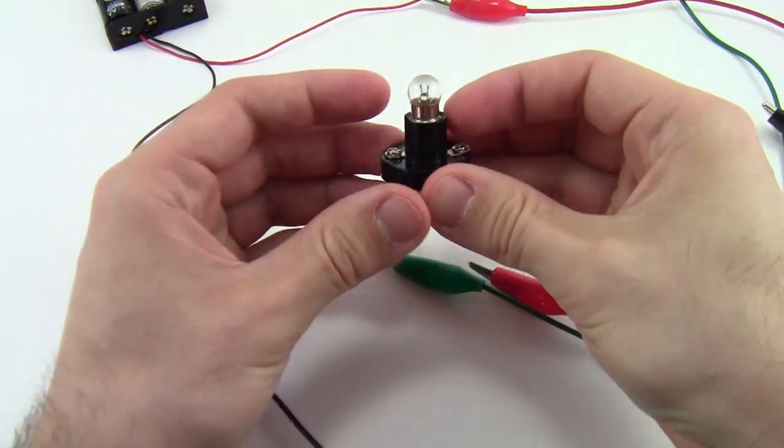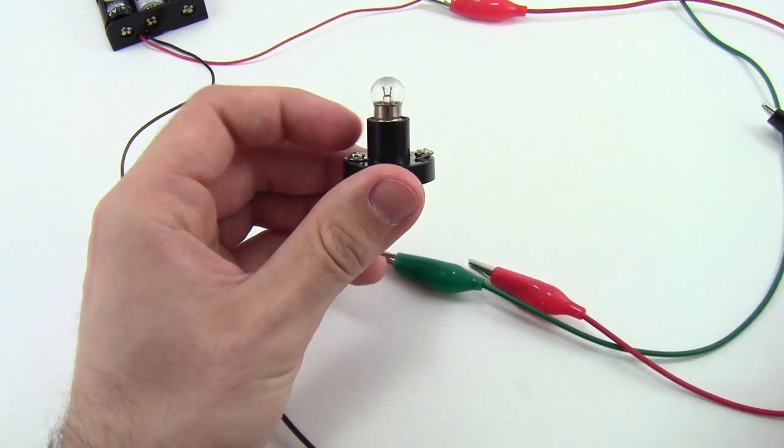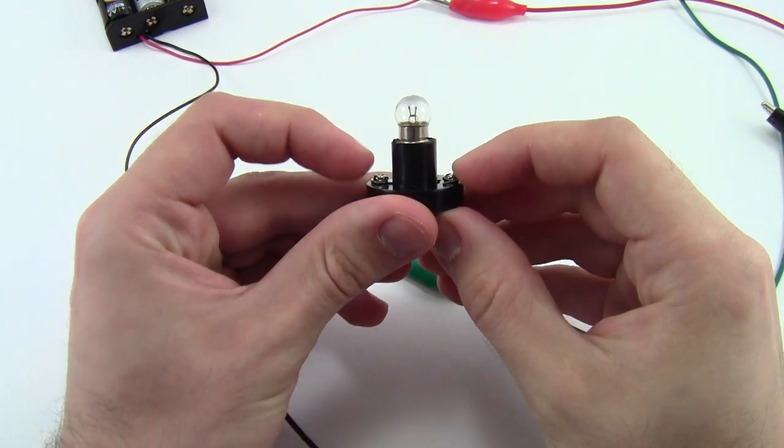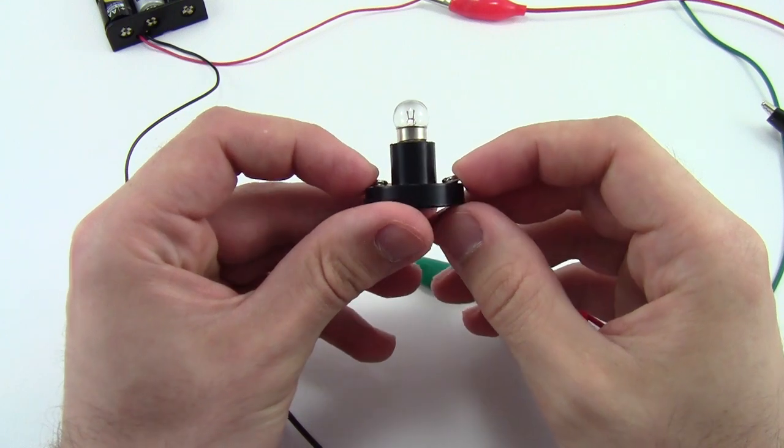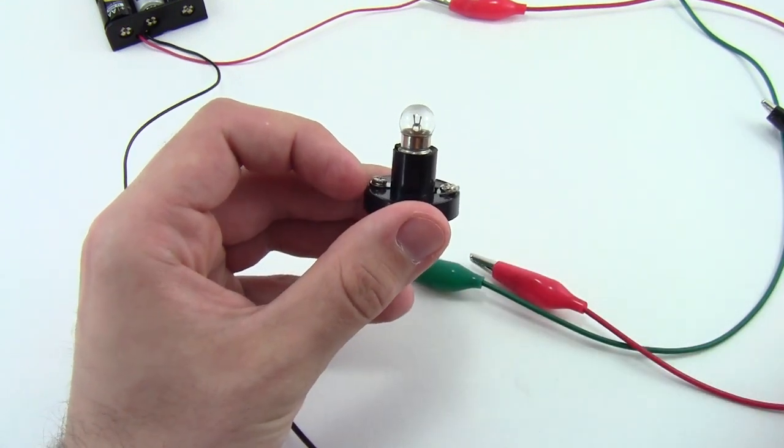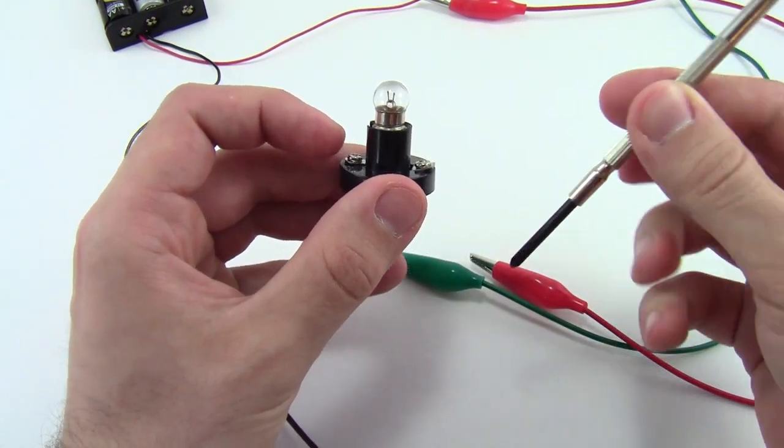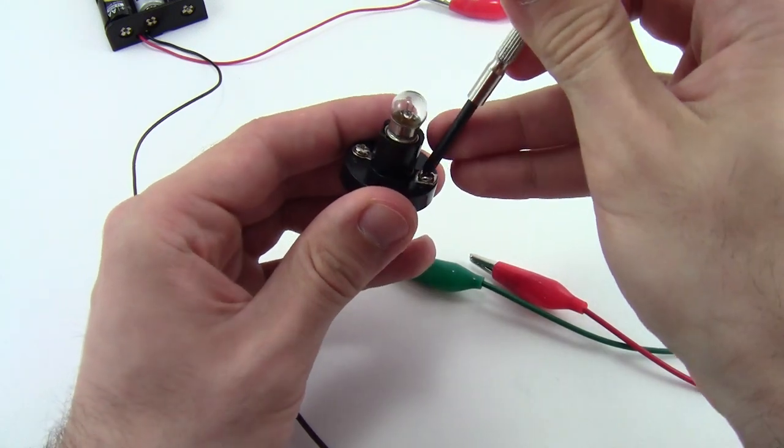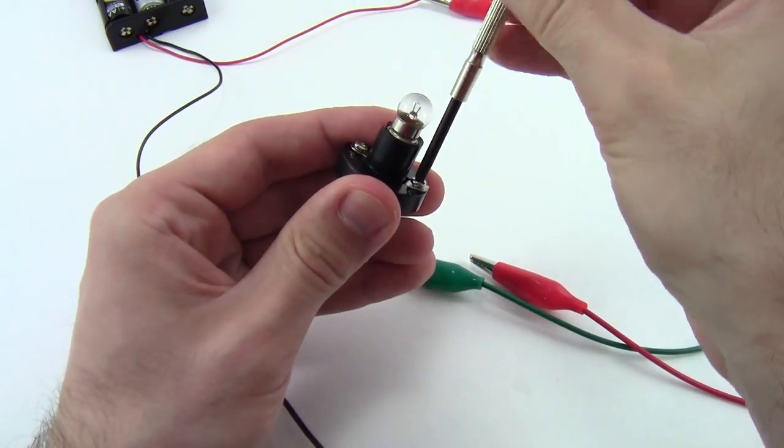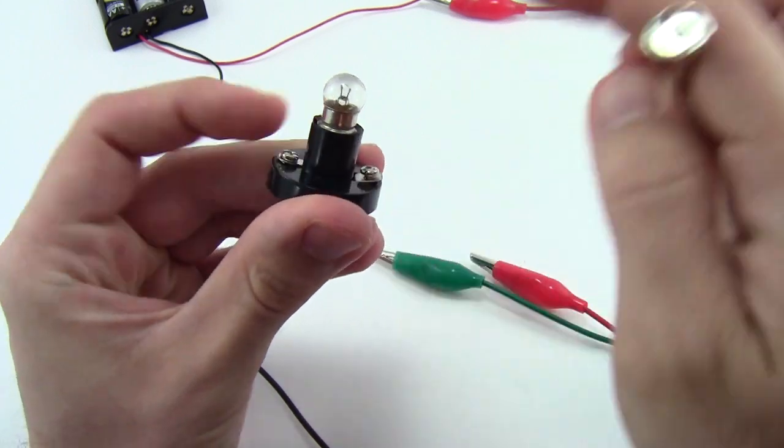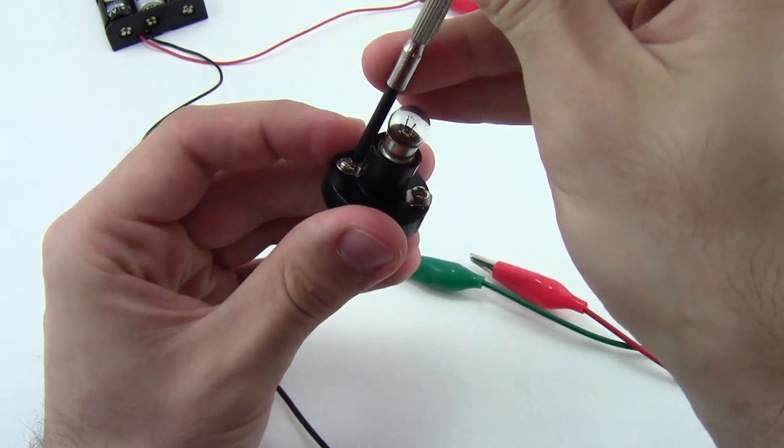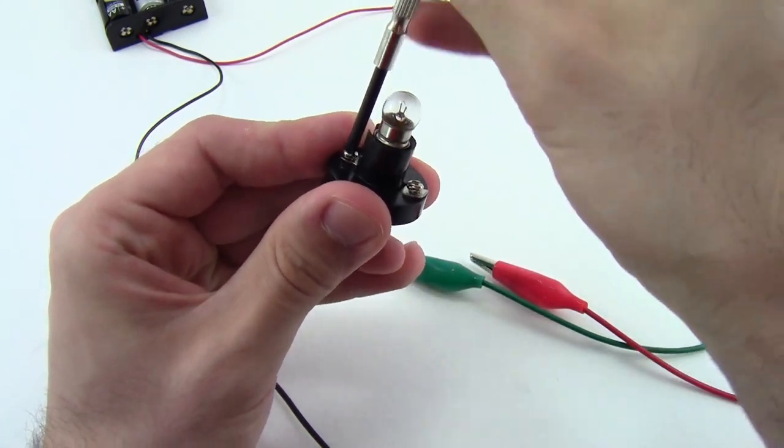Now you're going to take your light bulb holder, and it has these two little screws on it on either side that you can connect alligator clips to. Now it will be a little easier to connect to those if you actually take a small Phillips head screwdriver and loosen the screws slightly. That kind of gets the surface up away from the bottom so it's not flush there, and it will be easier to get them with the alligator clips.